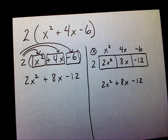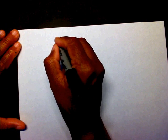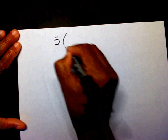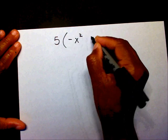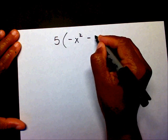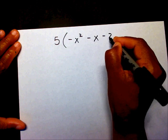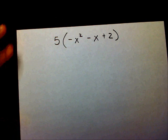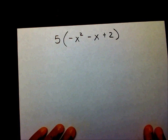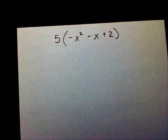This is a simple problem — let me let you try one. Let's try 5 times negative x squared minus x plus 2. Please put the video on pause and multiply those two.